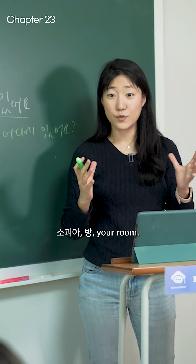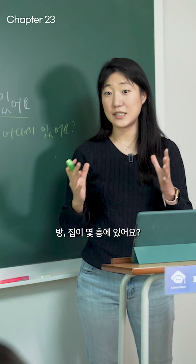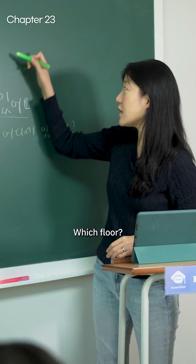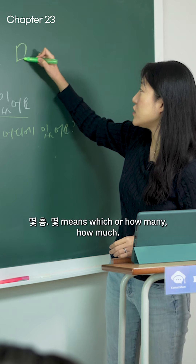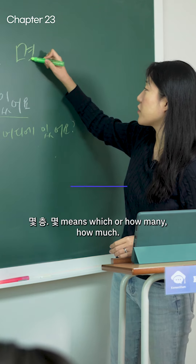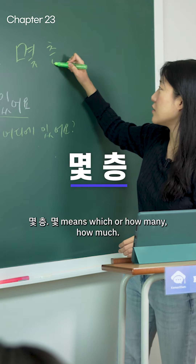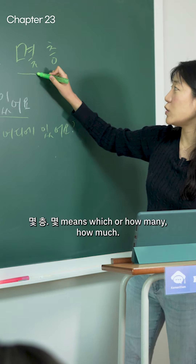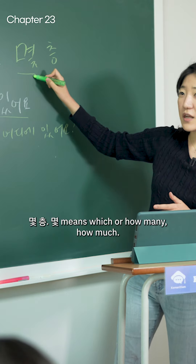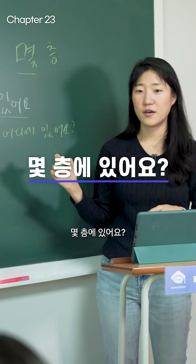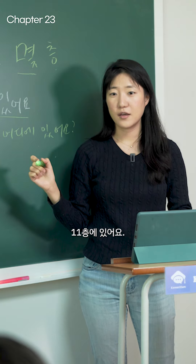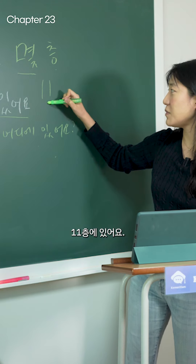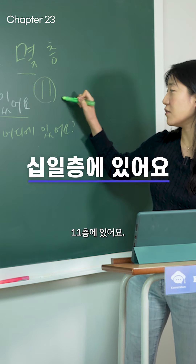Sophia, 방, your room — 집이 몇 층에 있어요? Which floor? 몇 층. 몇 means which or how many, how much. 몇 층에 있어요? 11층에 있어요. 11층에 있어요.